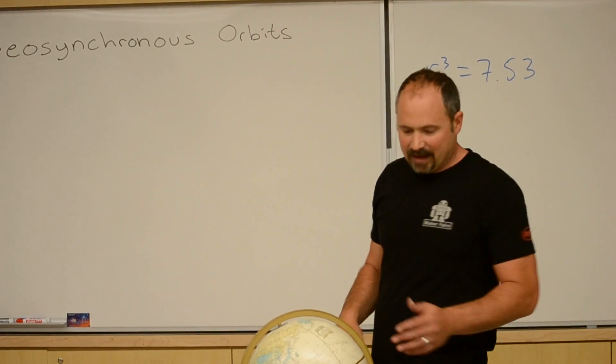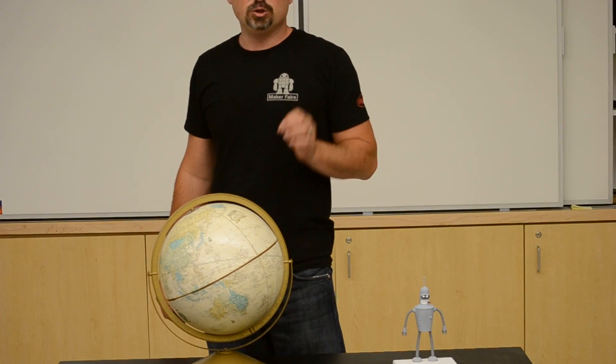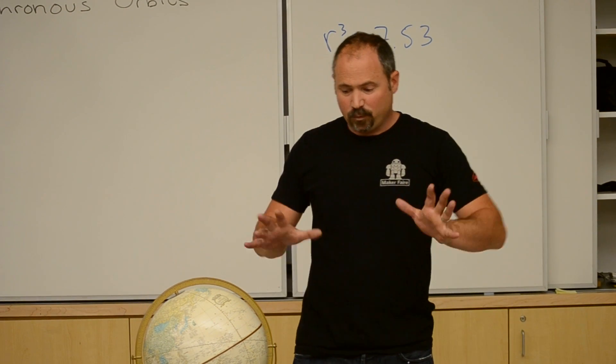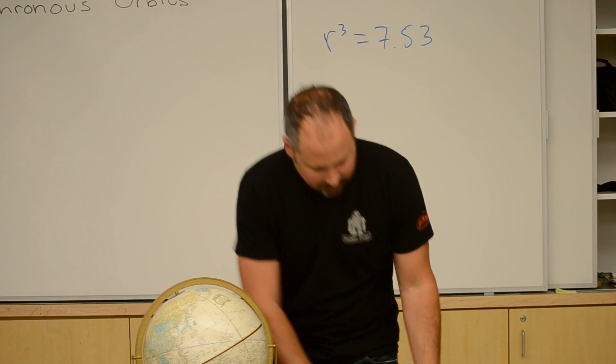Let's calculate the height above Earth's surface where you need to put a satellite in order for it to undergo geosynchronous orbit. What is geosynchronous orbit? It's the orbit for which the satellite stays over the exact same place on Earth.